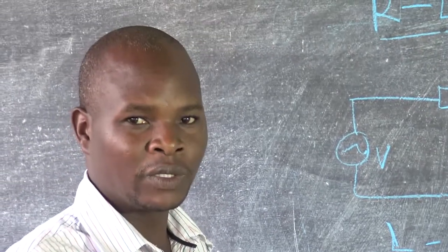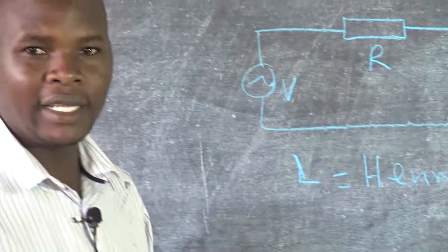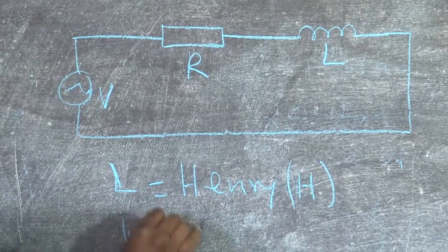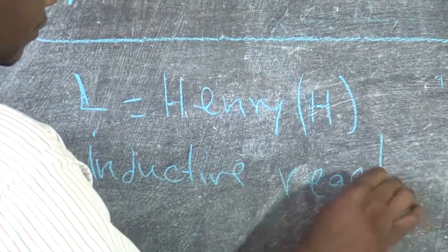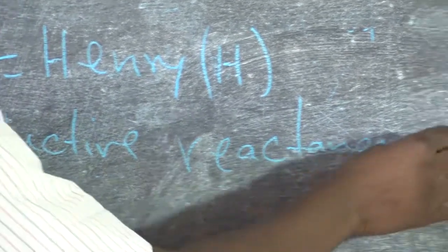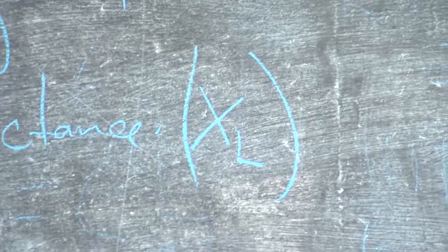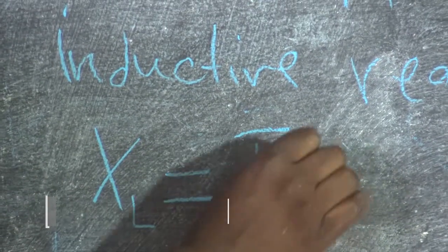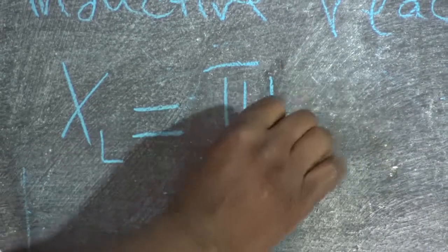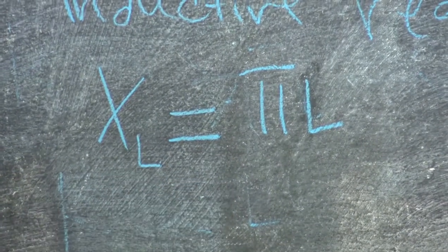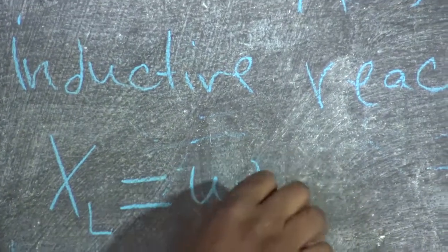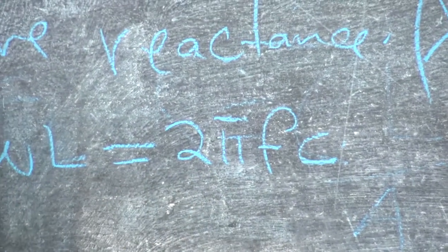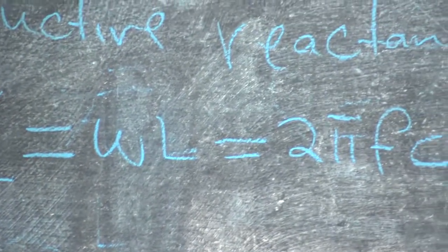In an electrical circuit, it is not acceptable to combine resistance and inductance directly. You have to convert inductance to what we call inductive reactance. Inductive reactance is normally denoted as XL. XL is given by the formula XL = 2πfL. When you use this formula, the SI unit of inductive reactance becomes ohms.